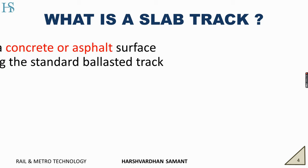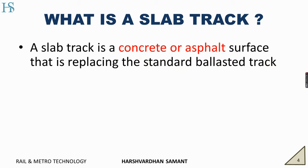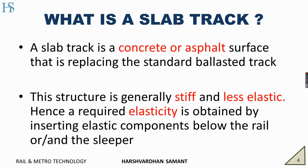So what is a Slab Track? A Slab Track is a concrete or asphalt surface that replaces a standard ballasted track. If we use concrete or asphalt, obviously we are going to get a stiff and less elastic structure. So we need some elasticity, which we obtain by inserting elastic components below the rail or sleepers.